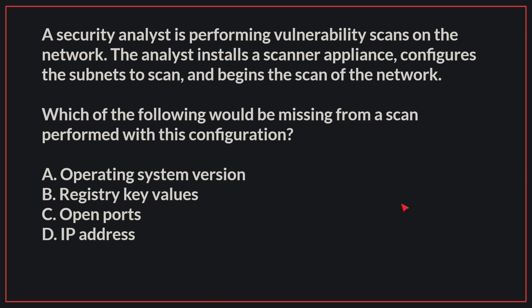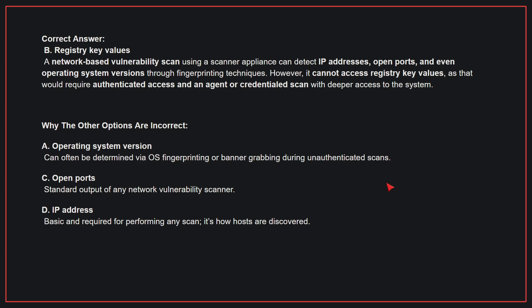The correct answer is B: Registry key values. A network-based vulnerability scan using a scanner appliance can detect IP addresses, open ports, and even operating system versions through fingerprinting techniques. However, it cannot access registry key values, as that would require authenticated access and an agent or credentialed scan with deeper access to the system.